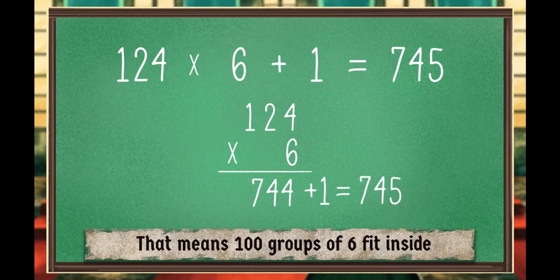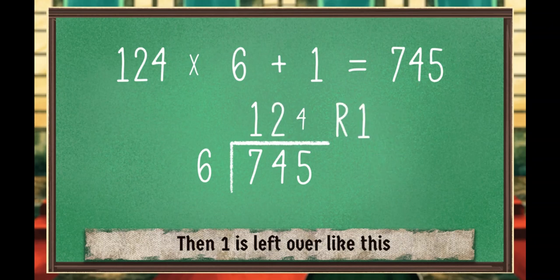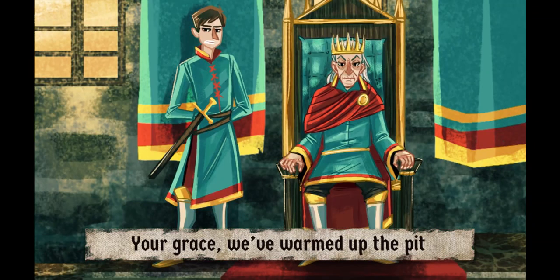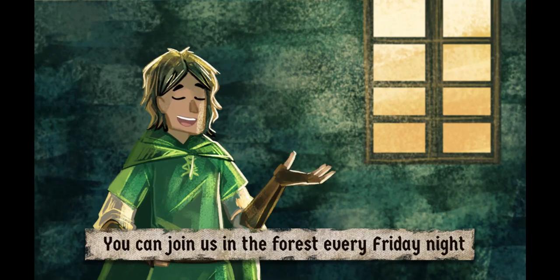That means 100 groups of 6 fit inside. Plus 20 groups of 6 all combined, and 4 groups of 6, oh my. Then 1 is left over like this. Your grace, we warmed up the pit. That's long division, and if you like, you can join us in the forest every Friday night.